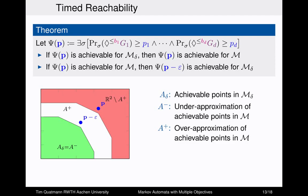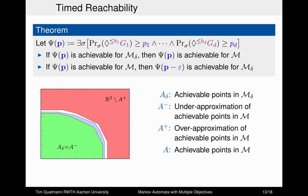Any point in the green area is achievable in the Markov automaton, any point in the red area is not, and for the white area we don't know. The actual set might overlap with the green set, and to obtain a finer approximation we can choose a smaller digitization constant delta.